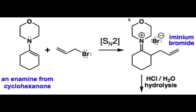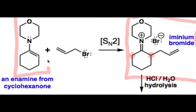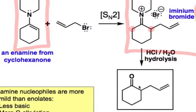After the formation of this iminium bromide, in order to alkylate again, we would have to deprotonate on one of the two carbons alpha to the iminium functional group. However, the original starting enamine is really the only base present, and this enamine is much less basic than the harsher enolate functional group. So we don't deprotonate this iminium bromide again, and after workup with HCl, we generate only the monoalkylated product.